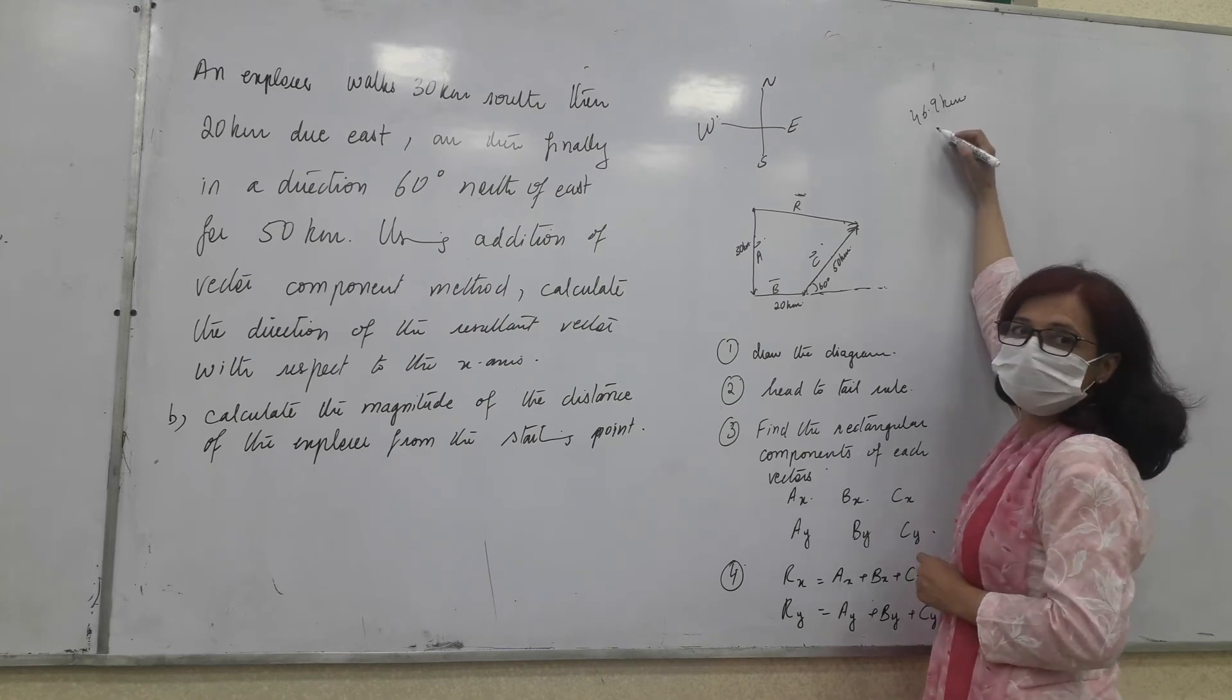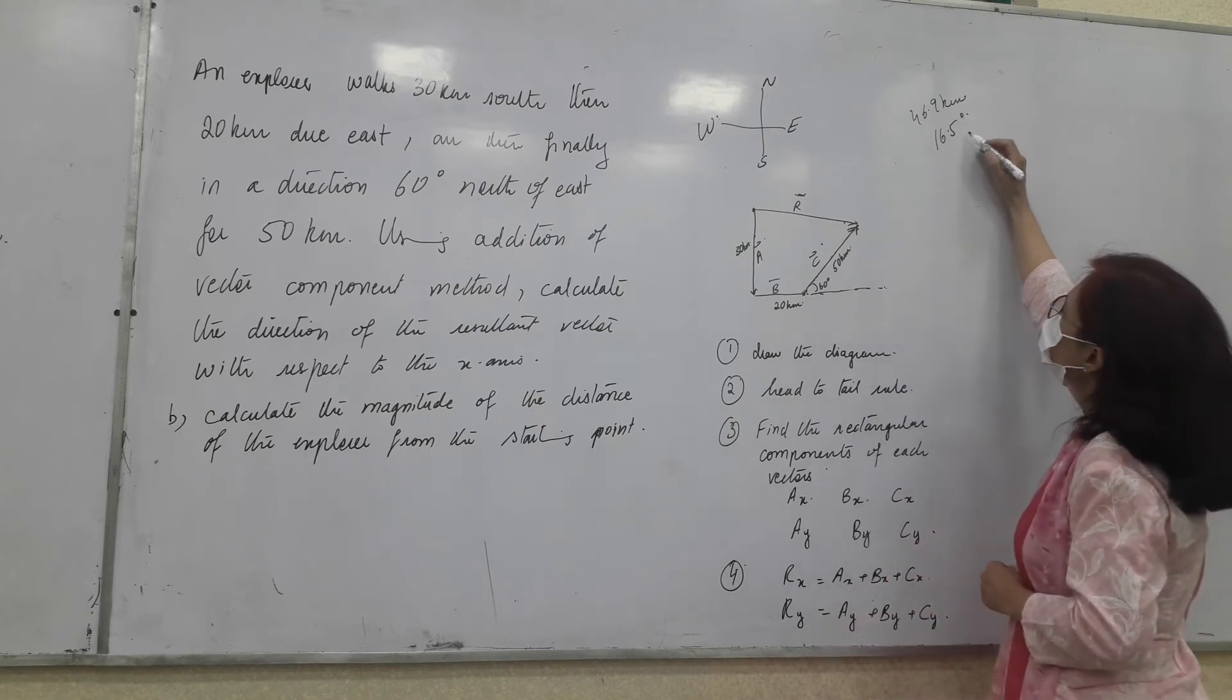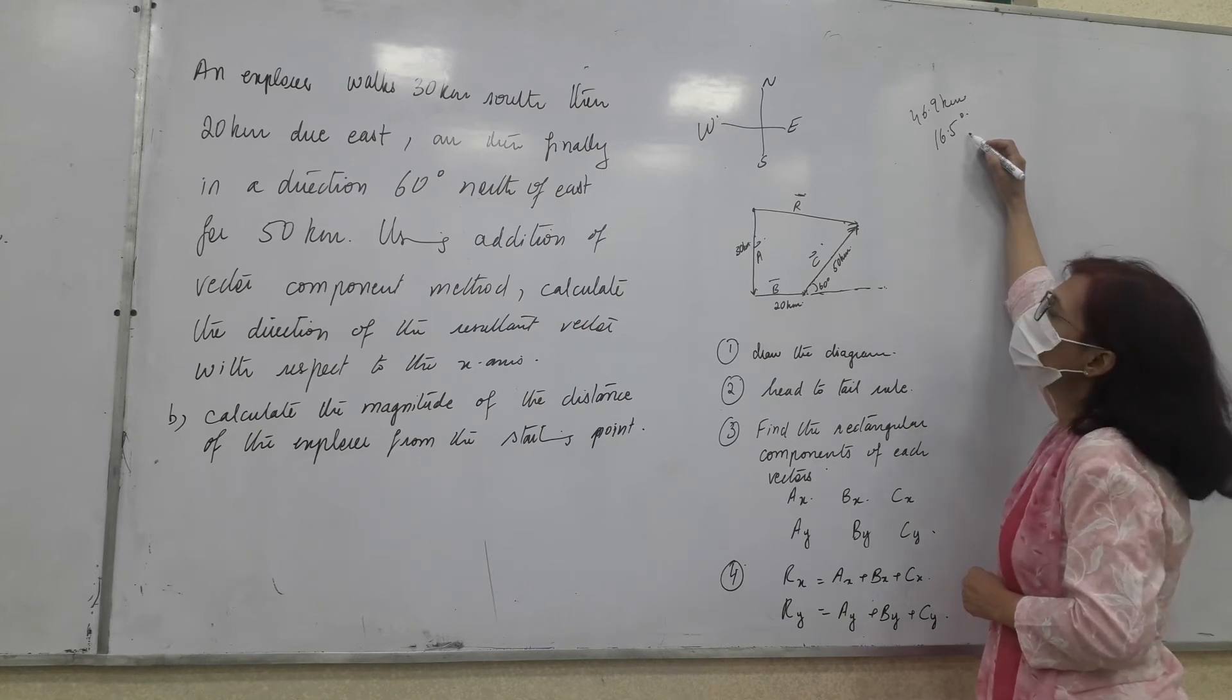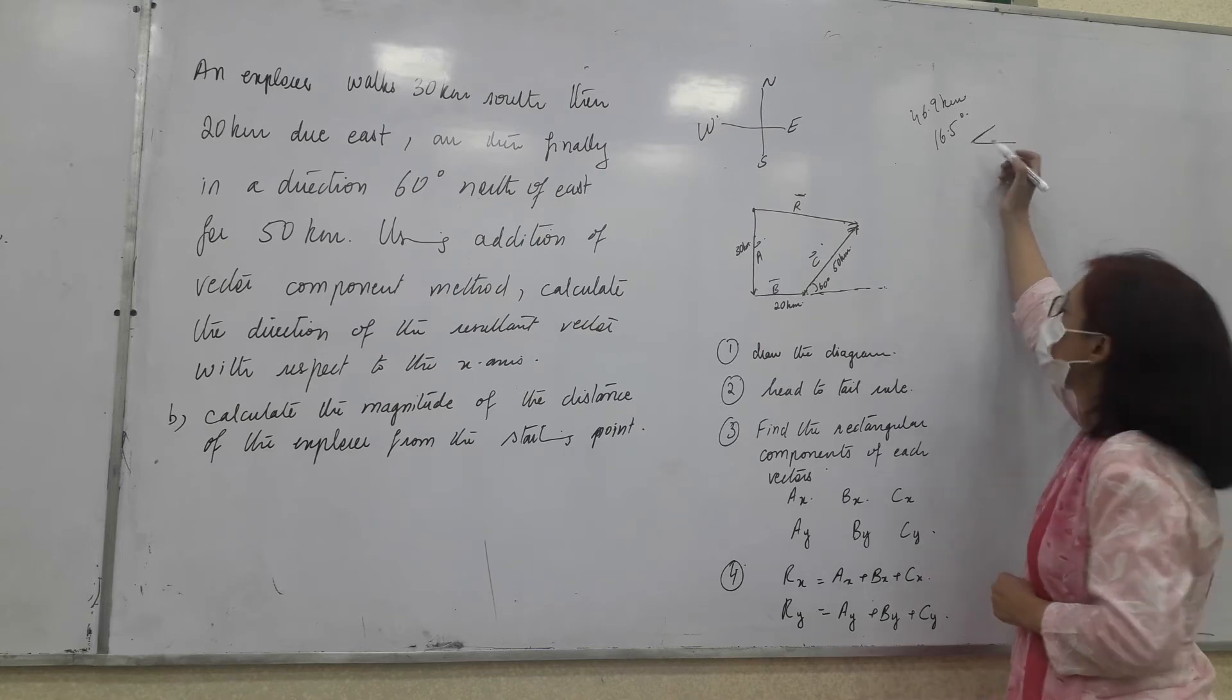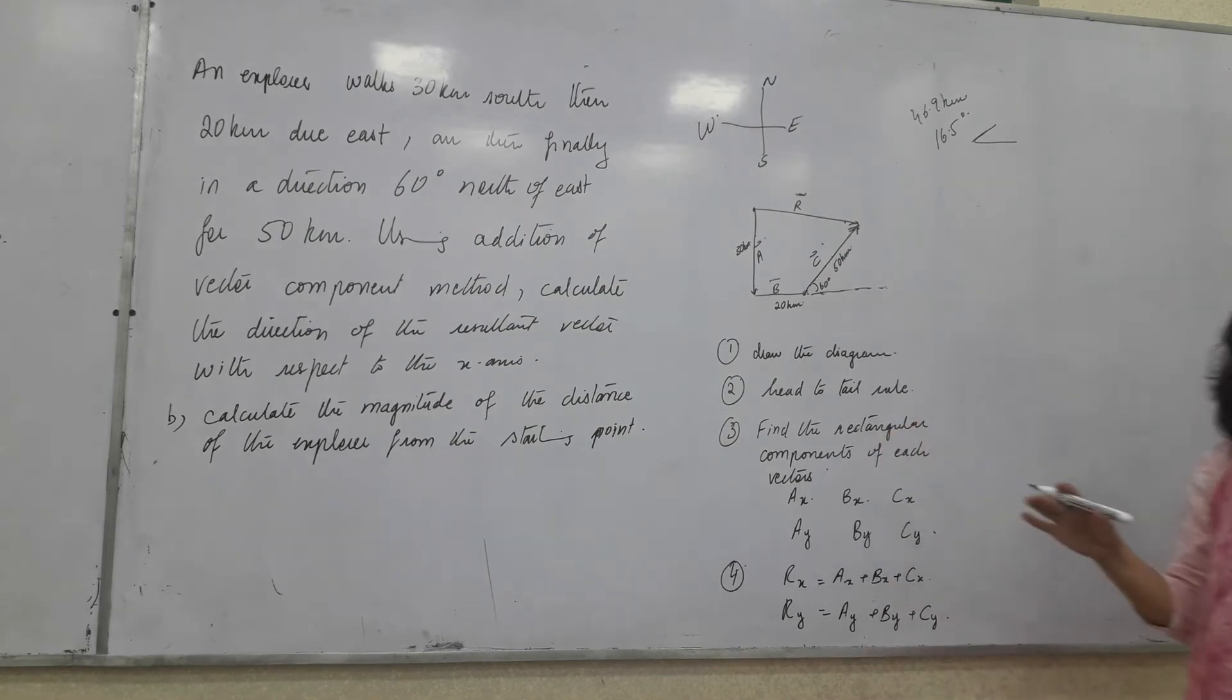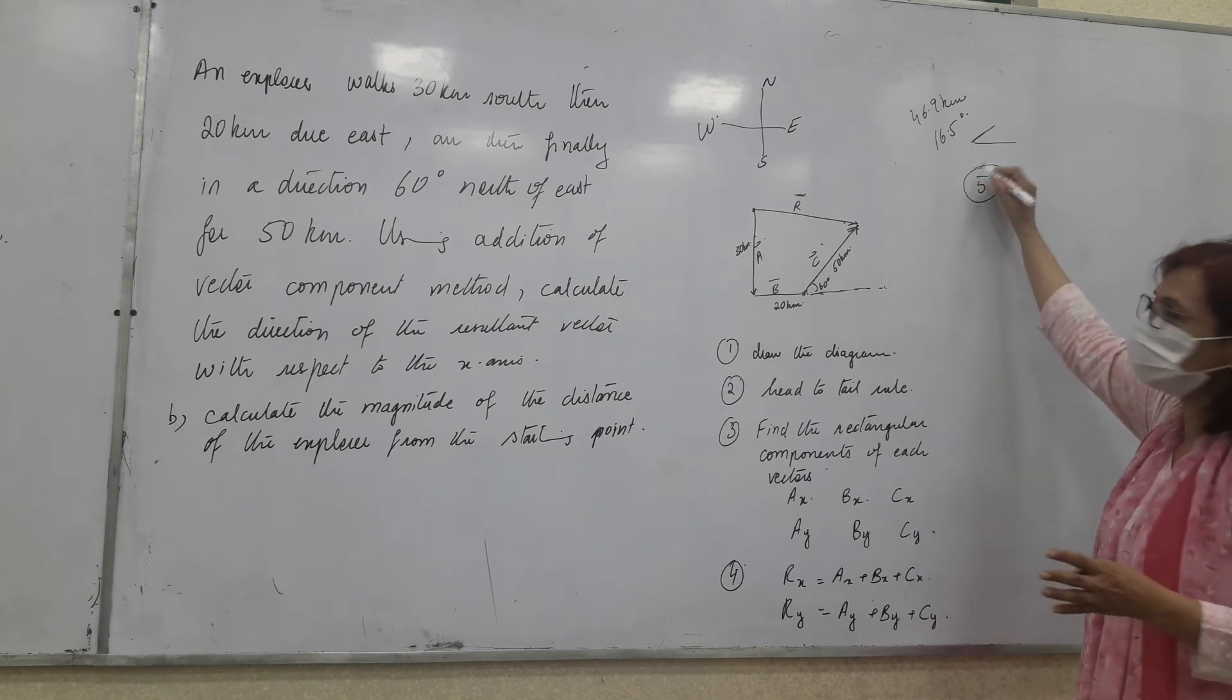And for the direction, I have 16.5 degrees north. North of east. With the x axis. Okay. Right. Let's just discuss the solution for everyone, for the students in class as well as the students who will be watching the video later on. So, these are the steps that we are going to follow. So, let's continue discussing them and then we will see the answer.